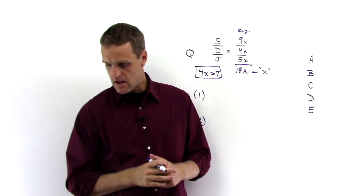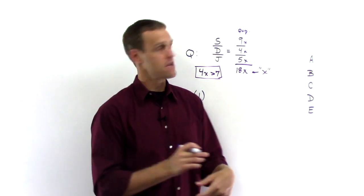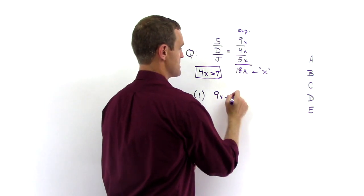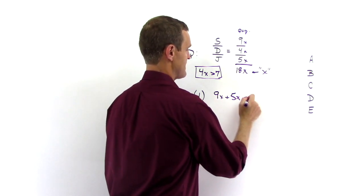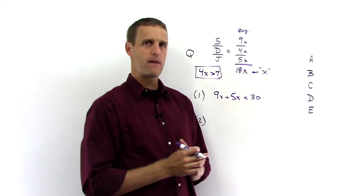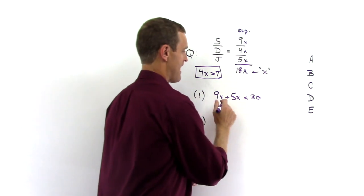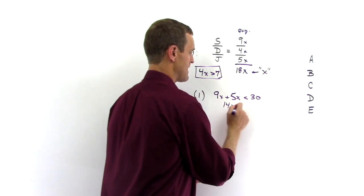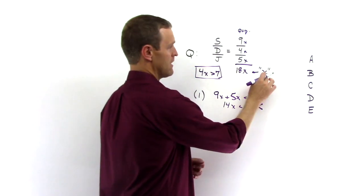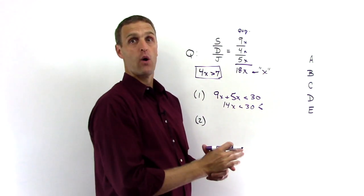So statement number one says, shirts plus jackets is less than 30. So shirts is 9X plus jackets is 5X. And that's less than 30. Now at first glance, it might look like that's not going to be enough information. It's an inequality. 9 plus 5 is 14X. So 14X is less than 30. So really, what does that mean about X? We can answer the question if we know X.